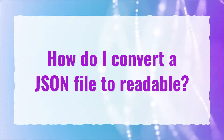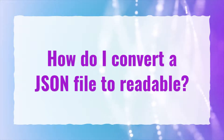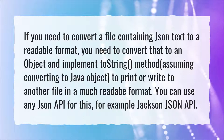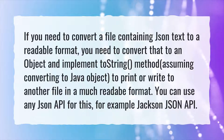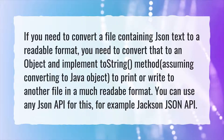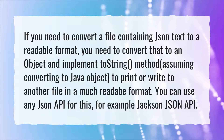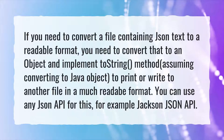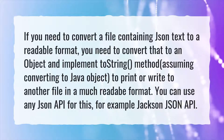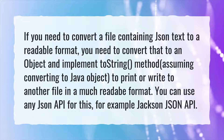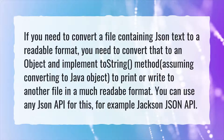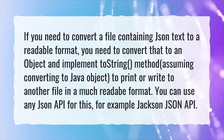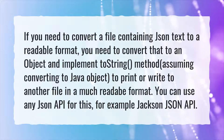How do I convert a JSON file to readable? If you need to convert a file containing JSON text to a readable format, you need to convert that to an object and implement the toString method, assuming converting to a Java object, to print or write to another file in a much more readable format. You can use any JSON API for this, for example the Jackson JSON API.